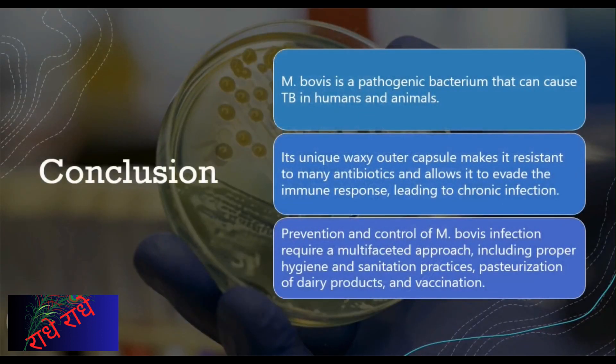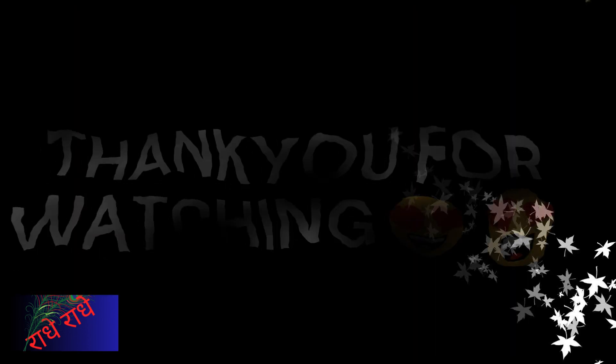In conclusion, M. bovis is a pathogenic bacterium that can cause TB in humans and animals. Its unique waxy outer capsule makes it resistant to many antibiotics and allows it to evade the immune response, leading to chronic infection. Prevention and control of M. bovis infection require a multifaceted approach, including proper hygiene and sanitation practices, pasteurization of dairy products, and vaccination. Thank you for your attention.